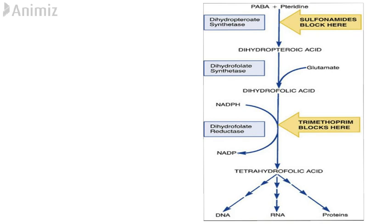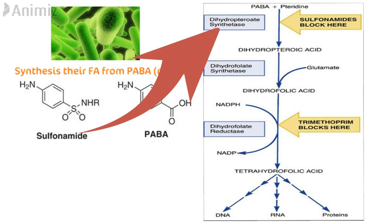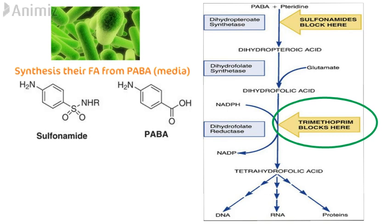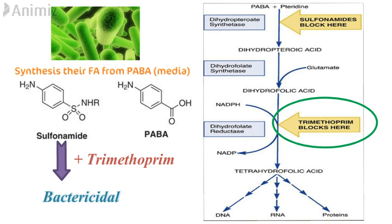Now let's see the mechanism of action of sulfonamides. This shows the pathway of tetrahydrofolic acid synthesis, which is required for DNA, RNA, and protein synthesis. Bacteria synthesize their own folic acid from para-aminobenzoic acid (PABA), present in the growth medium. Sulfonamide acts as a structural analogue to PABA and inhibits the synthesis of dihydrofolic acid. Another antibacterial agent, trimethoprim, blocks the dihydrofolate reductase enzyme and stops the synthesis of tetrahydrofolic acid. When sulfonamide is used alone it acts as a bacteriostatic agent, but when combined with trimethoprim it acts as a bactericidal agent. These two drugs have a synergistic effect, which is why the well-known combination drug cotrimoxazole is available in the market.